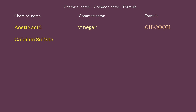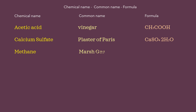Calcium sulfate, common name plaster of paris, formula CaSO4·2H2O. Methane, common name marsh gas, formula CH4.